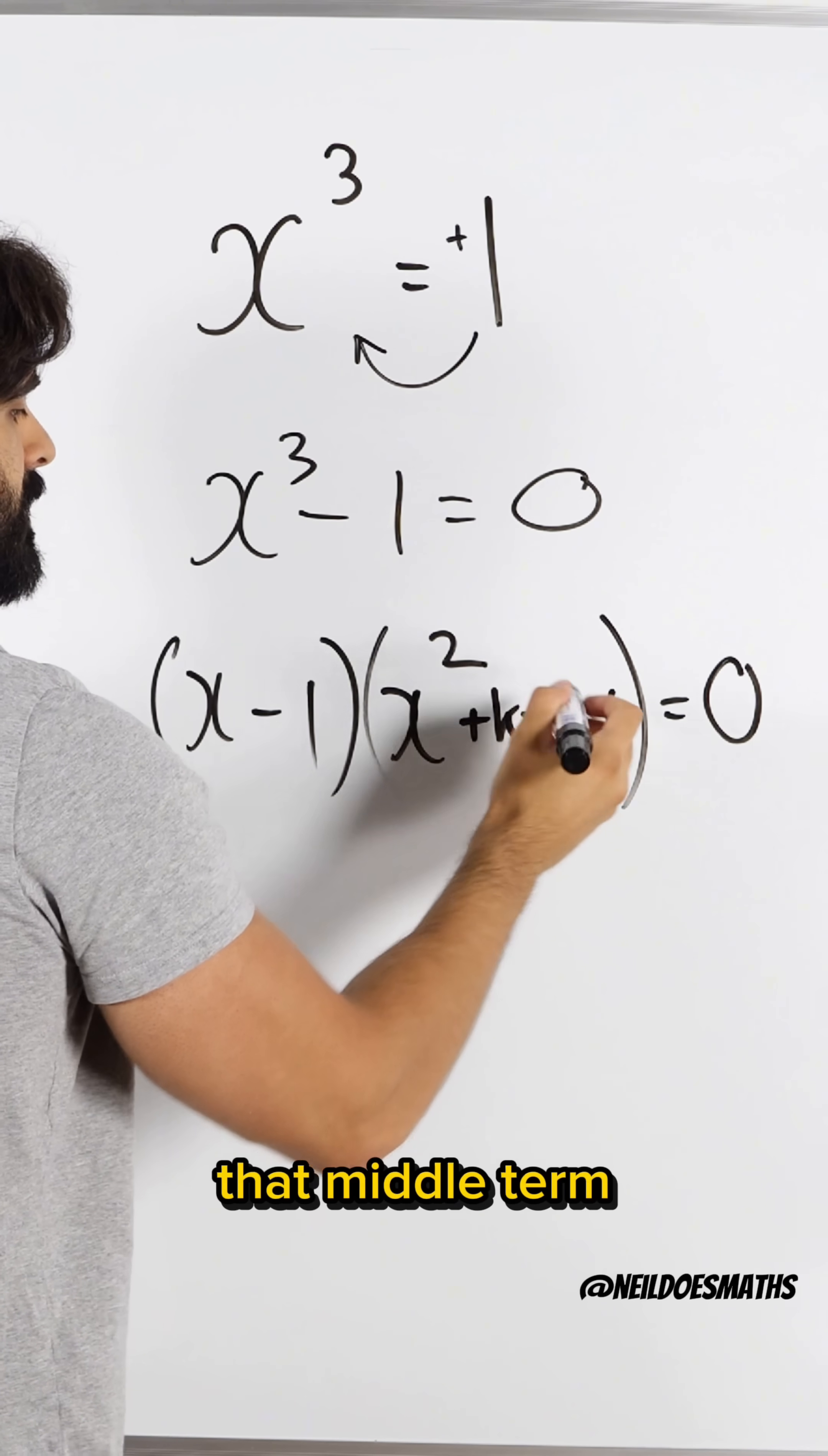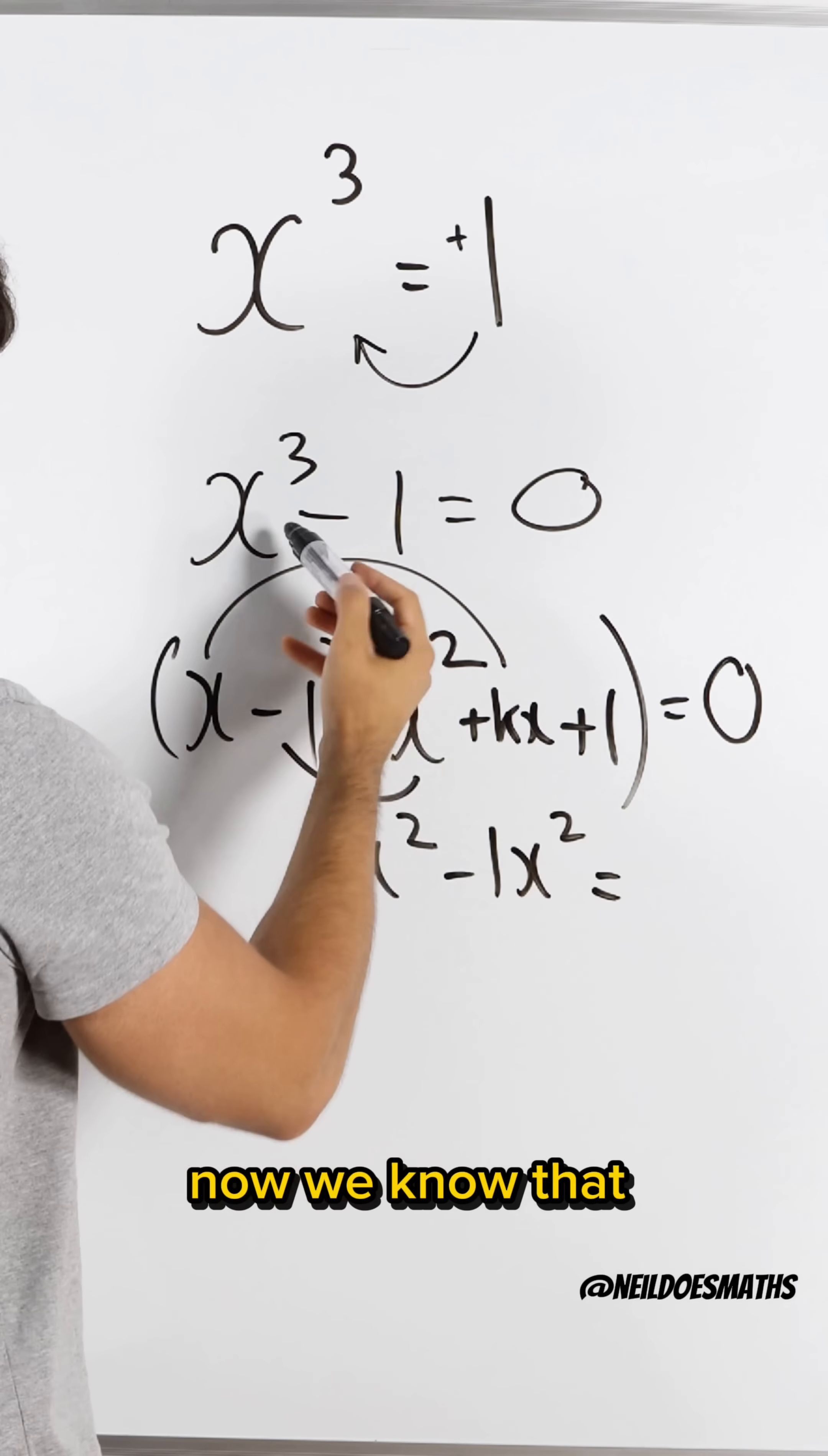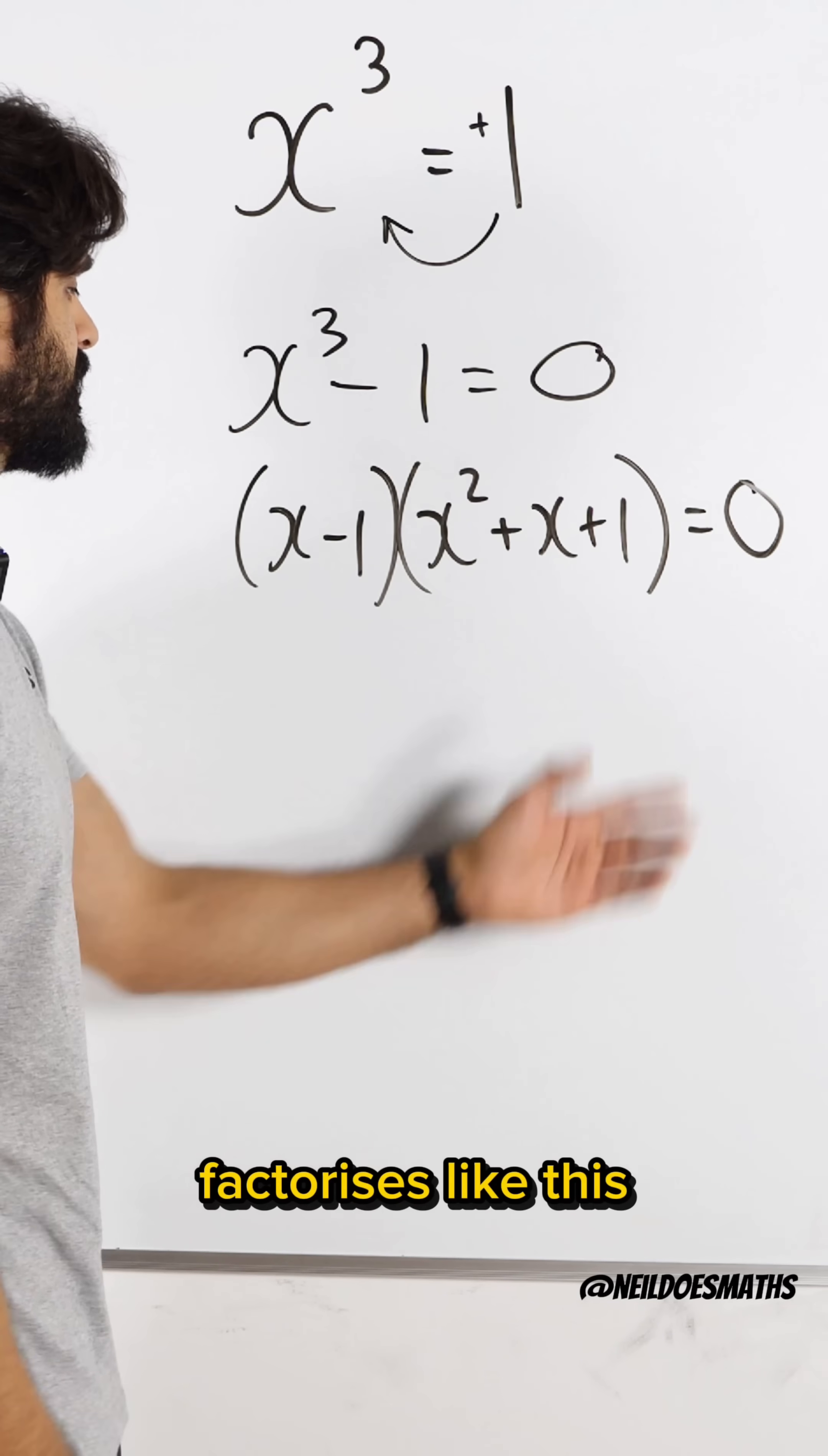We need to find that middle term so we can quickly find it by partially expanding. x times kx is kx squared. Here we get minus 1x squared. Now we know that needs to be 0 because in the expansion there is no x squared term. k minus 1 is 0, k has to be 1.